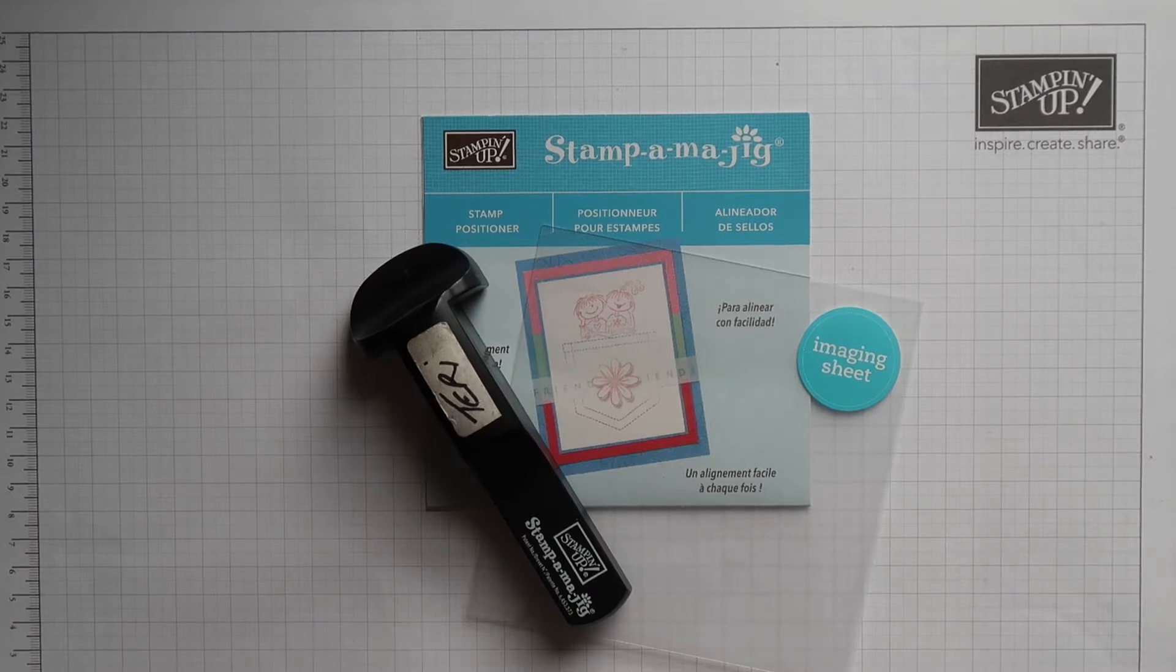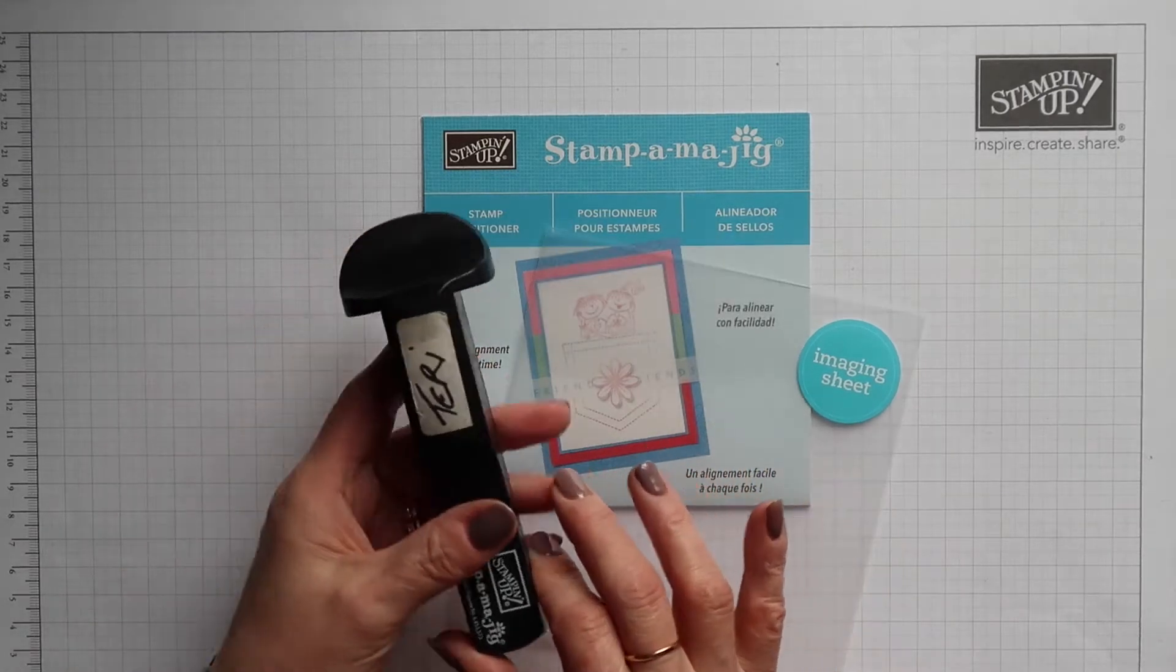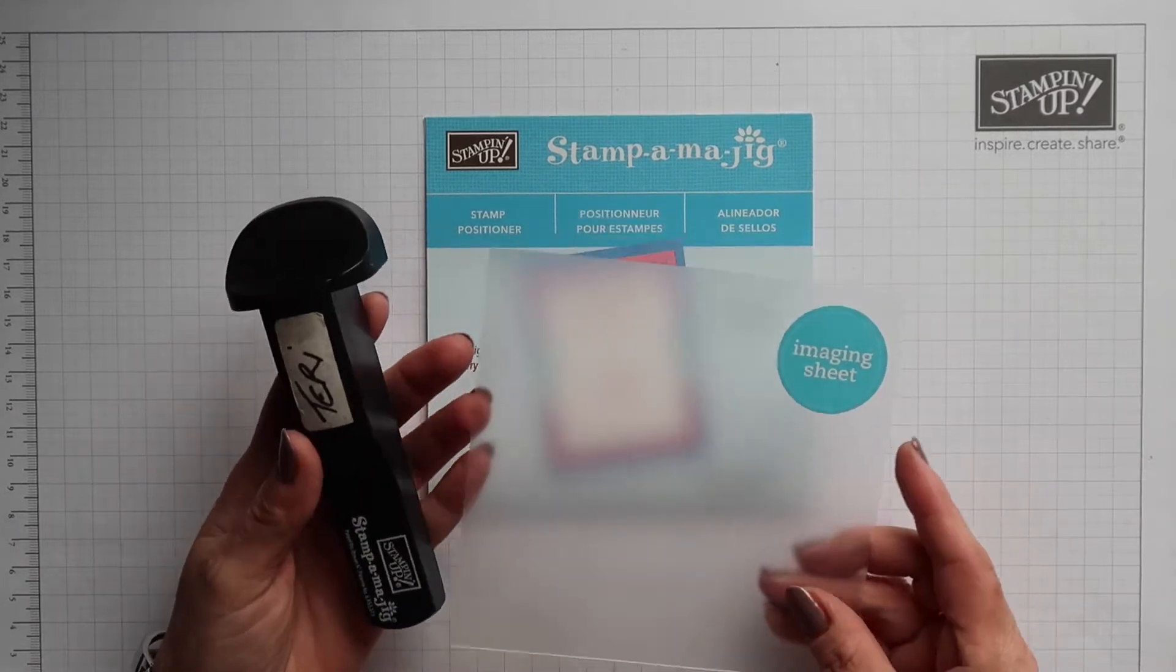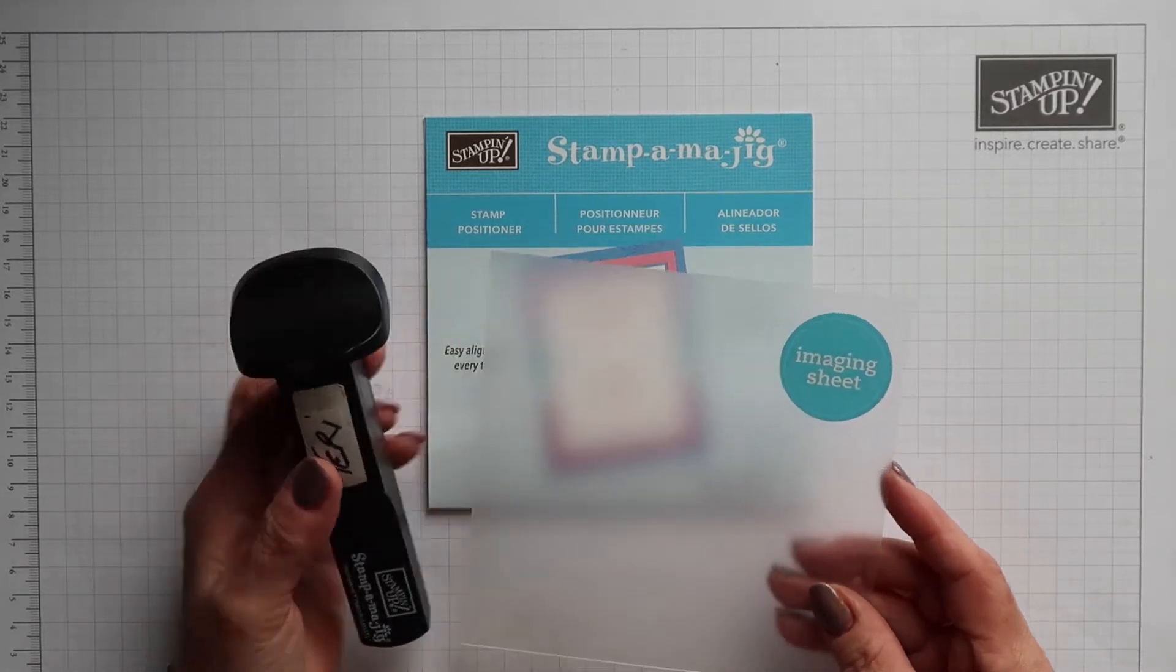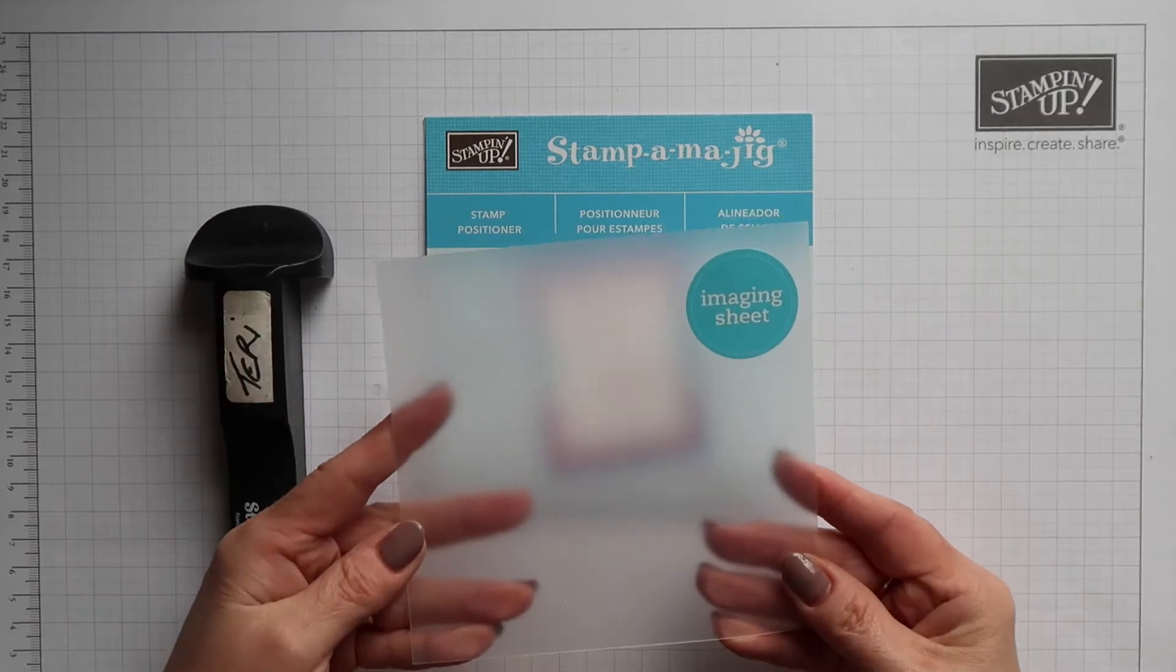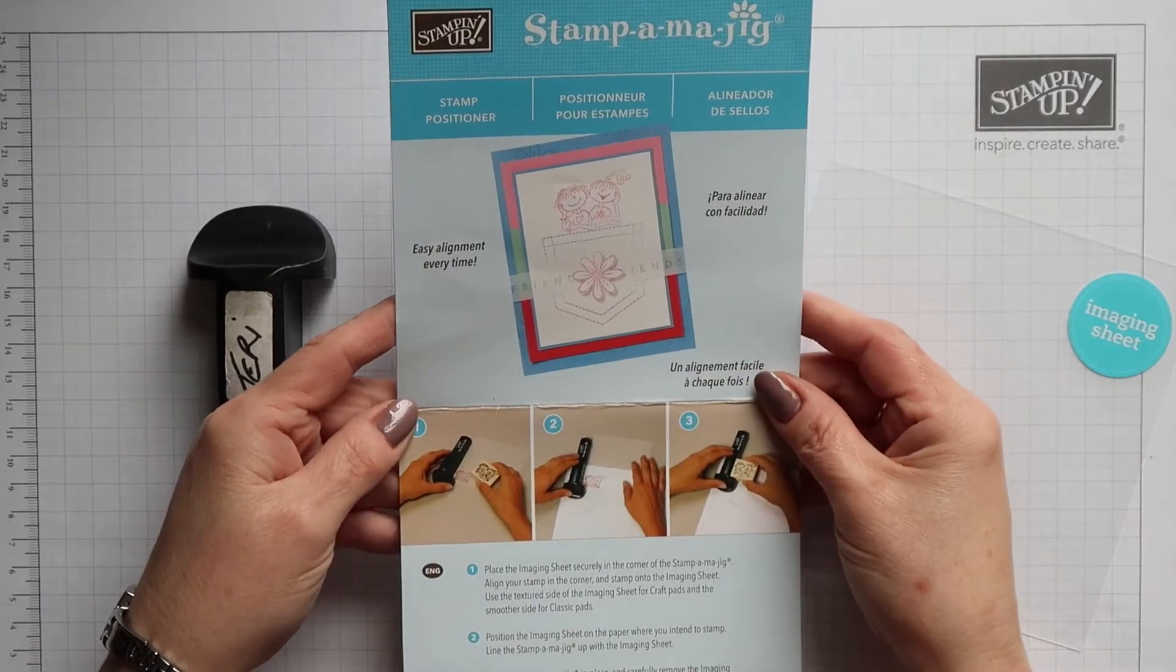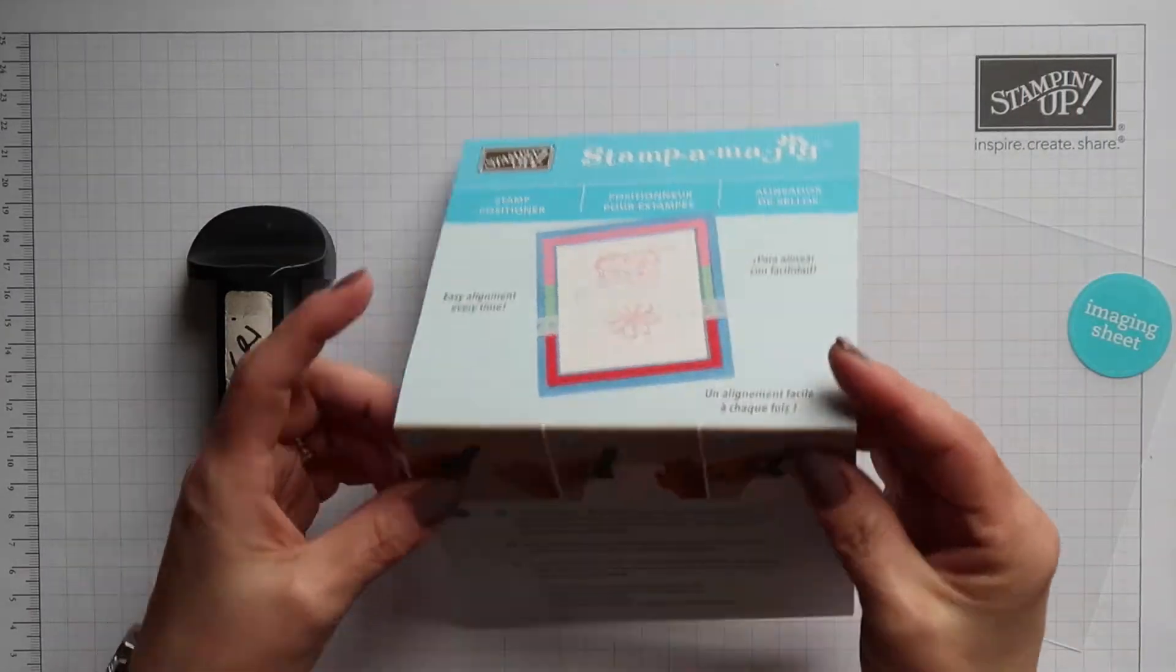Today's video is going to be a little bit different. I'm not going to take you through a complete project. Instead, I'm going to show you how to use the StampinMagic stamp positioning tool. This kit comes with the t-bar handle, a reusable plastic imaging sheet and also full instructions.